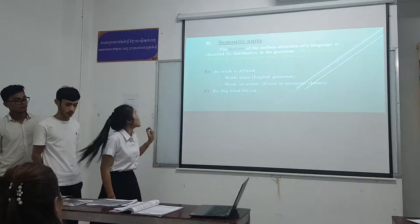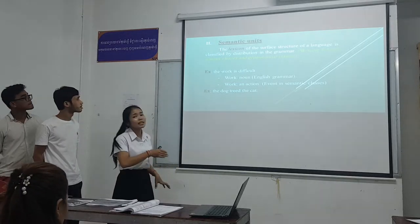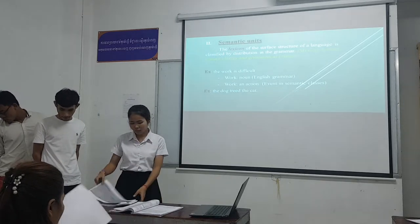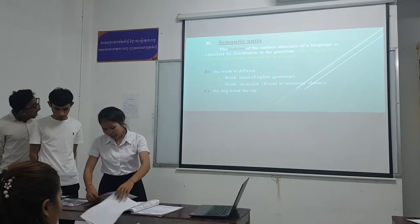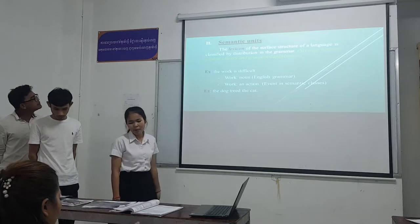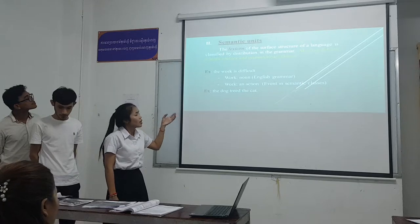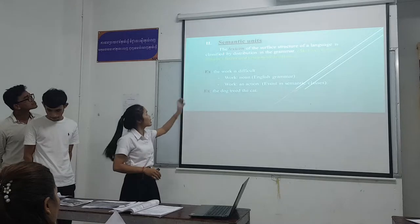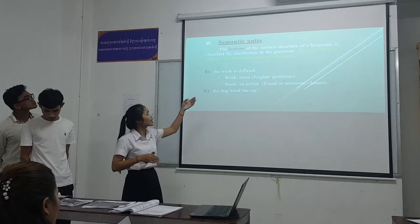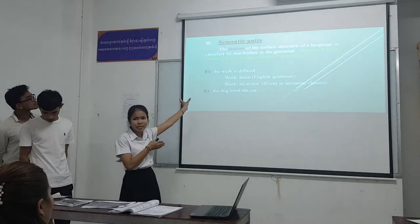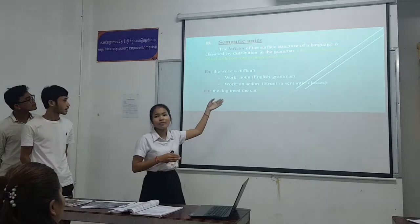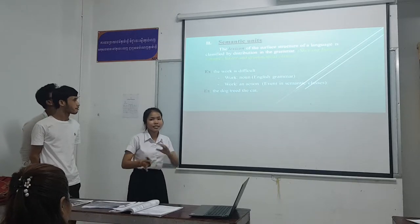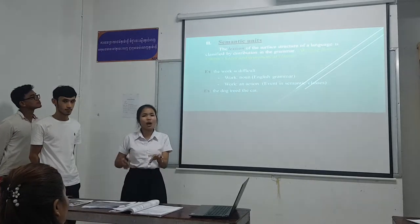Now let's go to the second point, talking about semantic units. The semantic structure of language is classified by description of grammar. It studies the skewing between semantic class and grammatical class. Semantic class refers to deep structure; grammatical class refers to surface structure. They always skip, meaning they change position or direction suddenly.